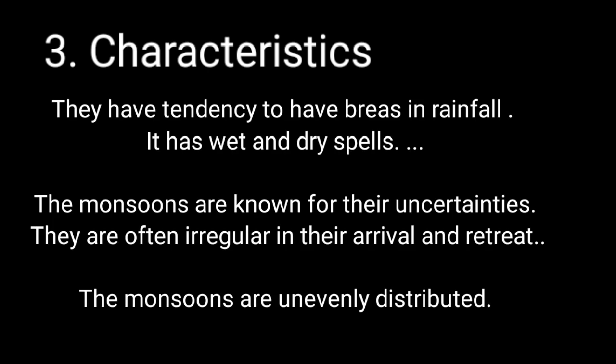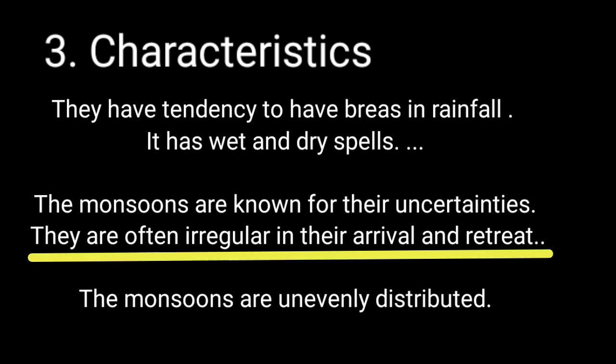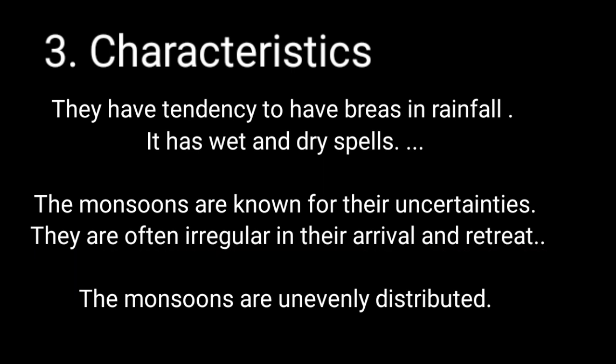The third point is the characteristics of monsoon. There are three main characteristics: first, it has wet and dry spells; second, it is irregular in terms of arrival and retreating time; and third, it is unevenly distributed and sporadic in nature.